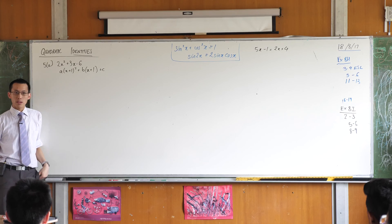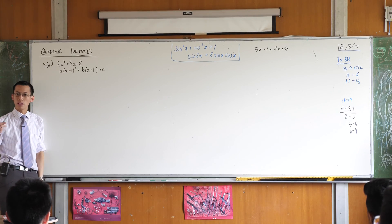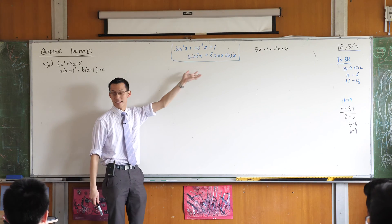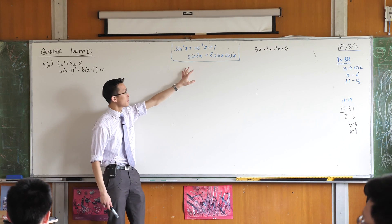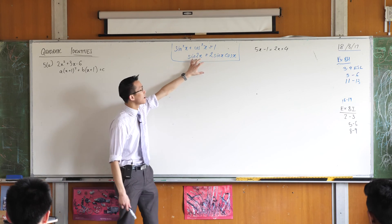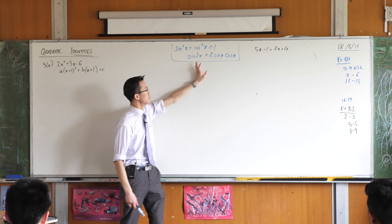Now it's the same deal with the quadratic identities. We look at identities in quadratics for the same reason that we look at identities in trigonometry. Sometimes a particular way of looking at something makes it much easier to deal with than the other or vice versa.